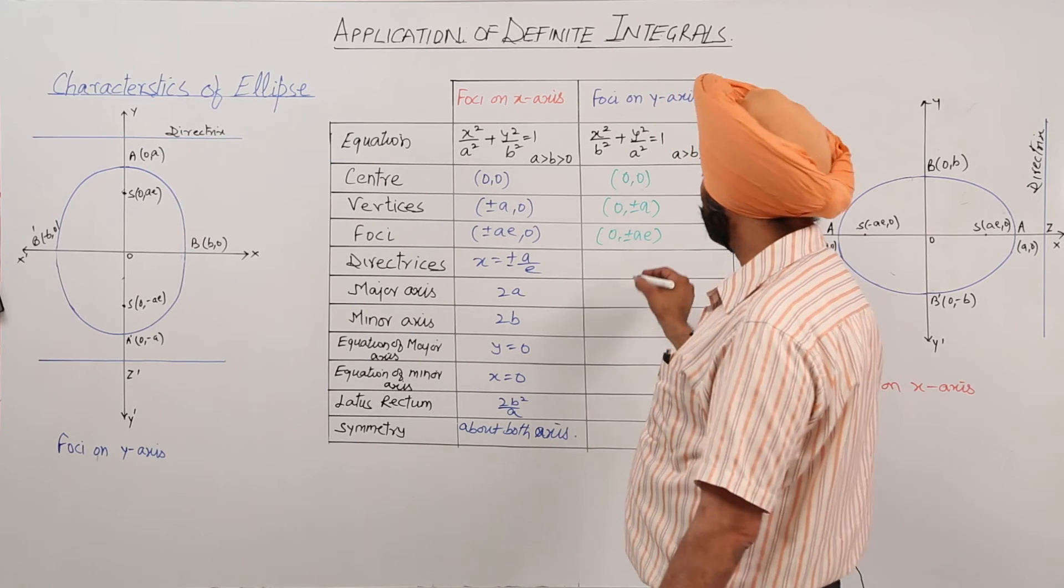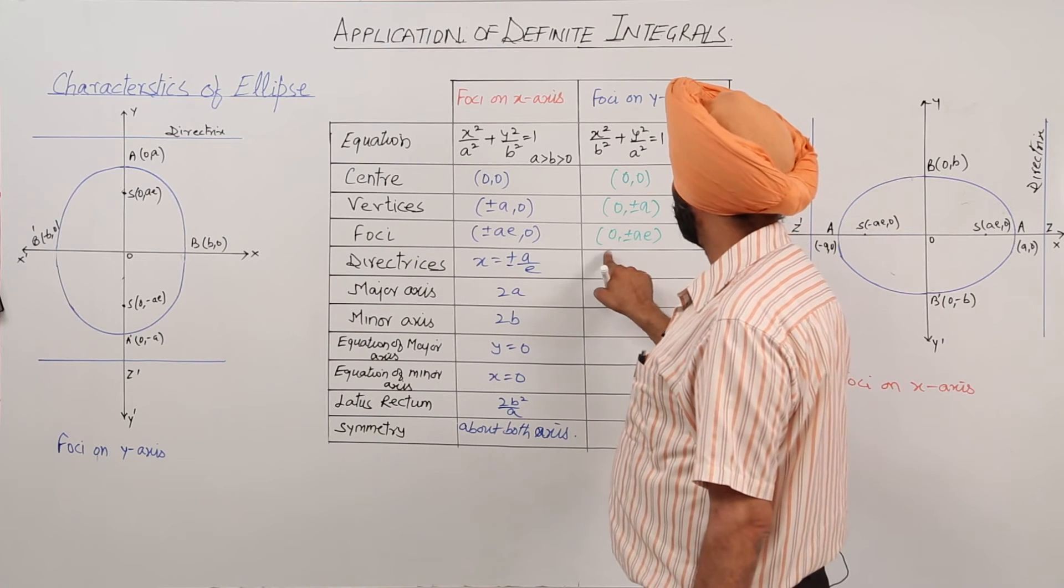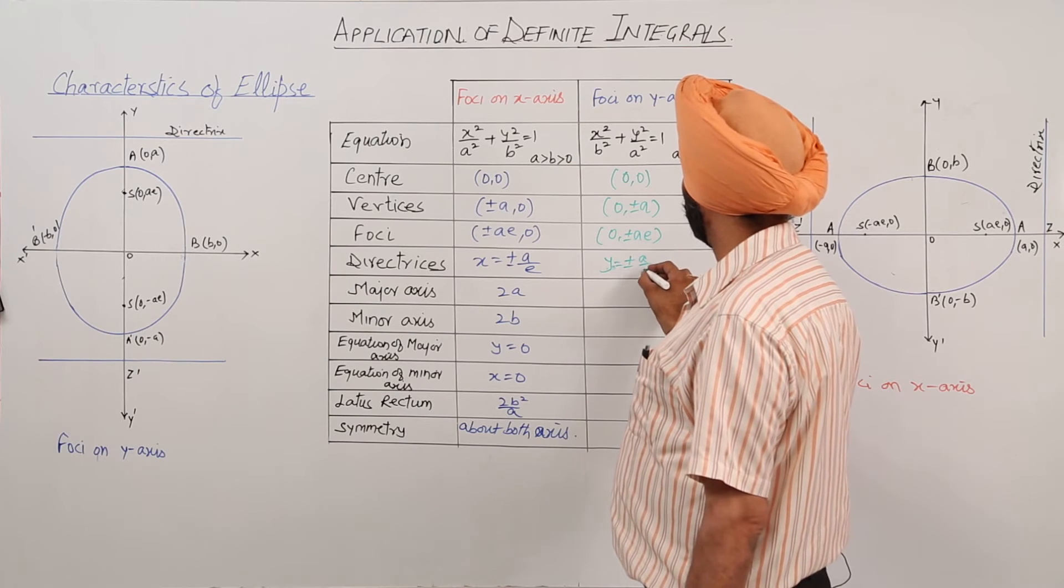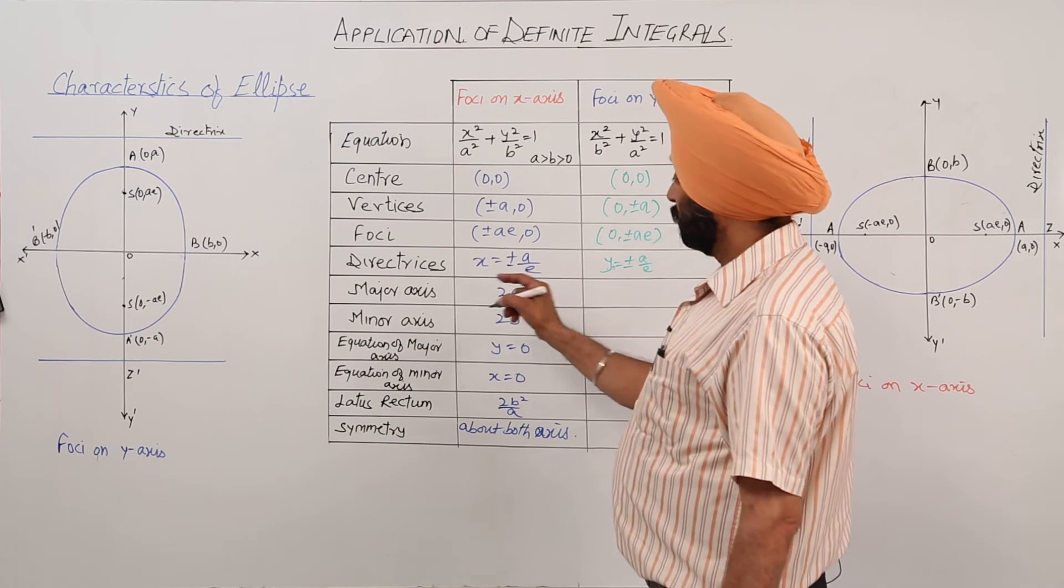Directrix: y is equal to plus minus a upon e. Major axis: 2a.